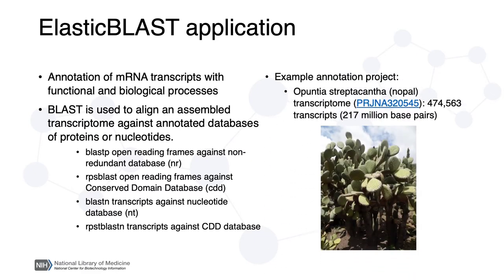An example of such a process would be the annotation of Opuntia Streptacantha, commonly known as the prickly pear or nopal, which is shown in this picture. Its assembled transcriptome is composed of about 474,500 transcripts, comprising 217 million base pairs.